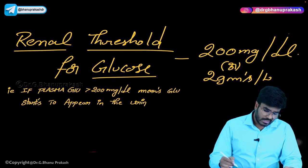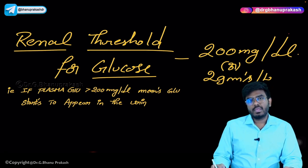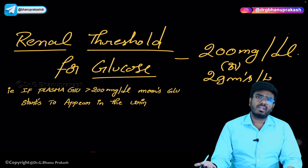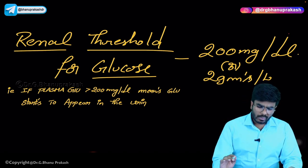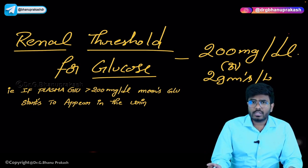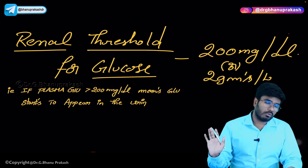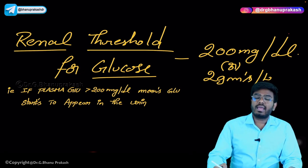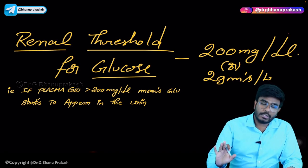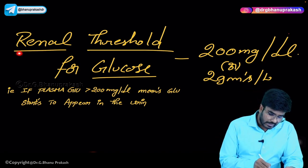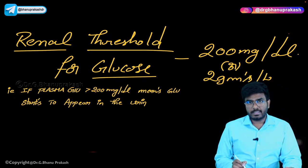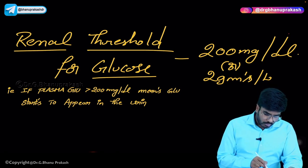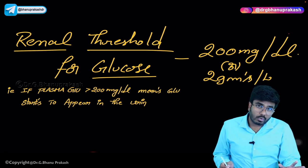Now let's discuss the renal threshold for glucose. Normally, random blood sugar is about 100 mg/dL and no glucose appears in the urine — 100% is reabsorbed in the PCT. However, when plasma glucose exceeds 200 mg/dL, for the first time glucose begins to appear in the urine. This plasma glucose level of 200 mg/dL is the renal threshold for glucose — a direct MCQ answer.